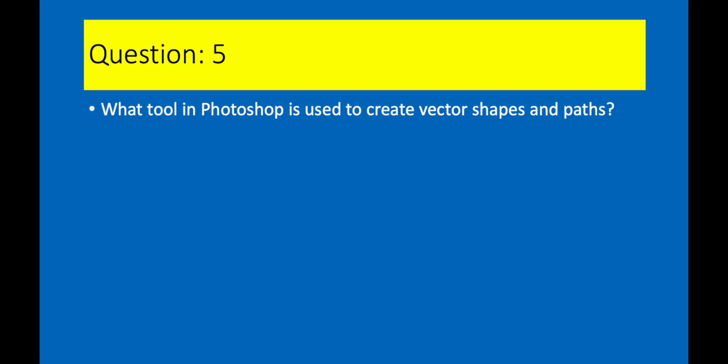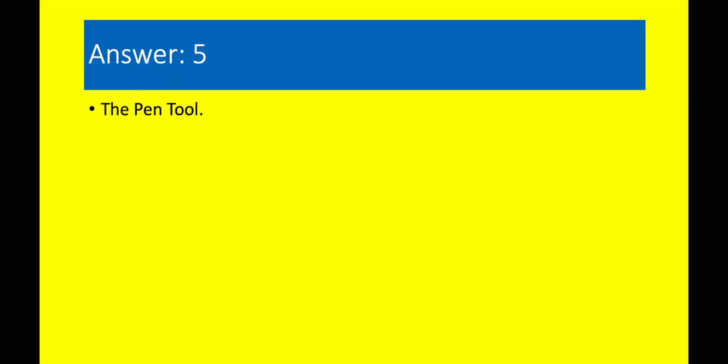Question 5. What tool in Photoshop is used to create vector shapes and paths? Answer 5. The Pen tool.